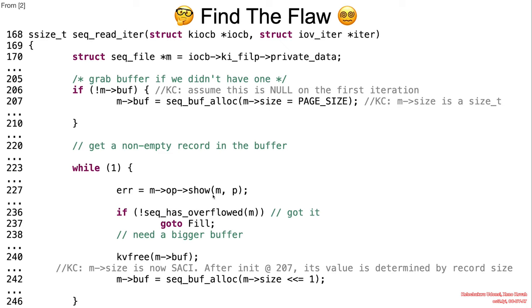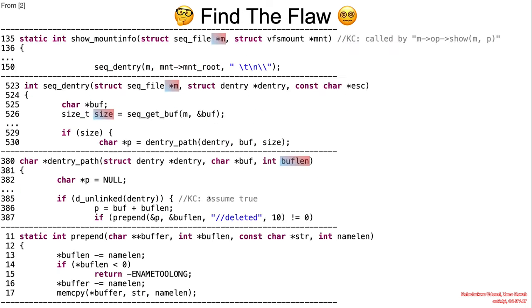Additionally, line 227 has the potential of invoking some other functions where the size member of the secfile struct will be interpreted as a signed int via an implicit cast. This slide illustrates one such code path.